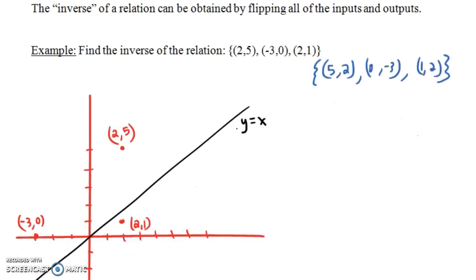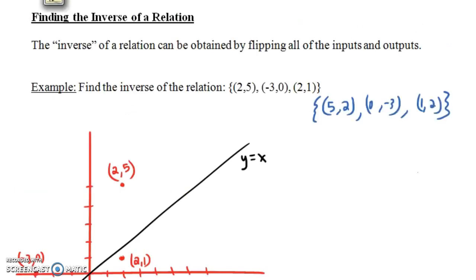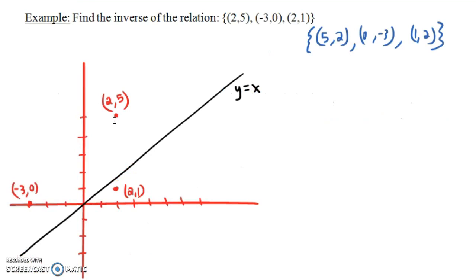Now what does this have to do geometrically? If we graph our original relation, notice it just consists of these three ordered pairs, and notice also it's not a function. It doesn't pass the vertical line test. What would the inverse relation look like?